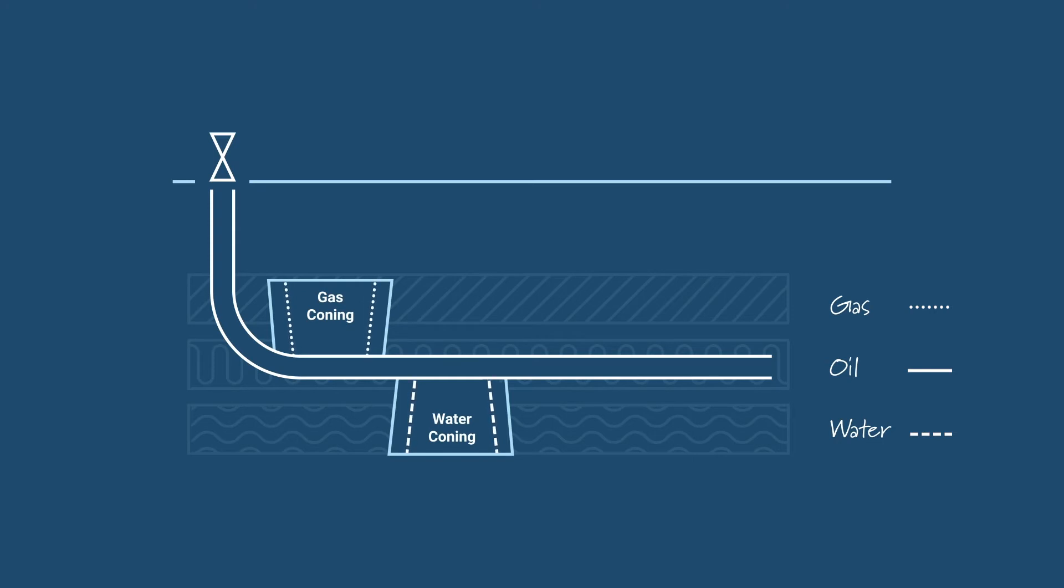Coning is a term describing the upward movement of water or the downward movement of gas as a consequence of the decreasing oil. This causes the unwanted fluids to be drawn into the well, replacing oil in the production stream.